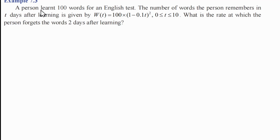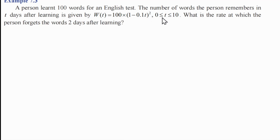A person learned 100 words for an English test. The number of words the person remembers in t days after learning is given by w(t) = 100(1 - 0.1t)², where 0 ≤ t ≤ 10. What is the rate at which the person forgets the words 2 days after learning?